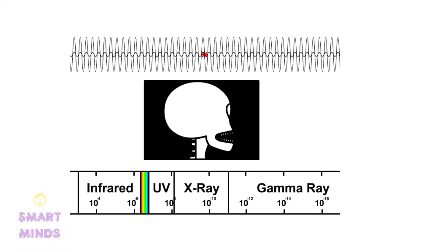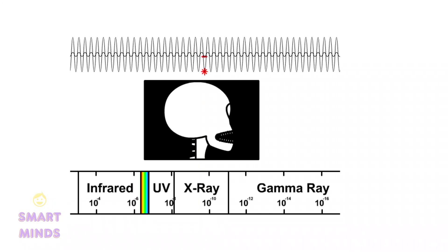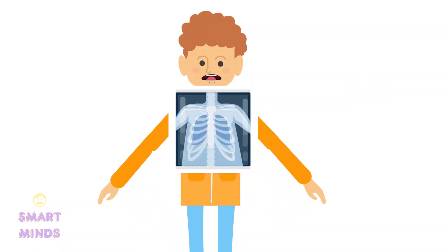X-rays have wavelengths shorter than UV radiation and can penetrate through tissues and bones. They are used for medical imaging and security screening.